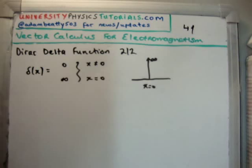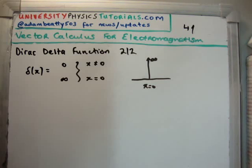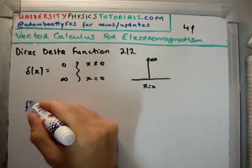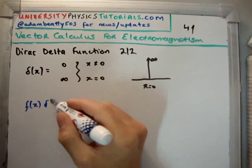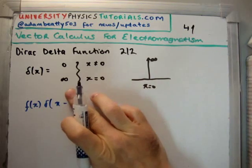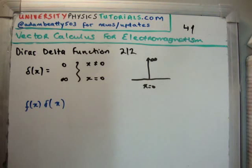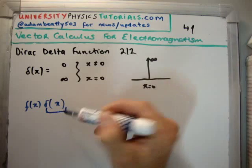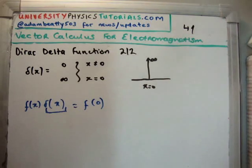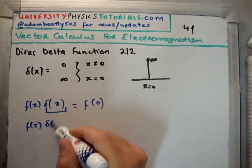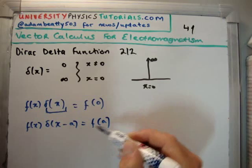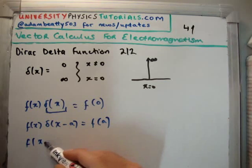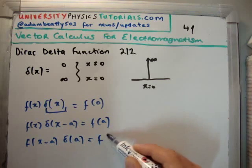But it has a sifting property as well. Even though it's actually not necessary for this particular video, it is a sifting property that it can pick out the value of a function. If you multiply any function f of x by your delta x, it will pick out the value of your function. Because the delta function will only be non-zero at the origin, this is going to pick out the value of f at 0. Then we have our sifting property, where if we shift the delta function, f of x times delta x minus a, we get back f at a.